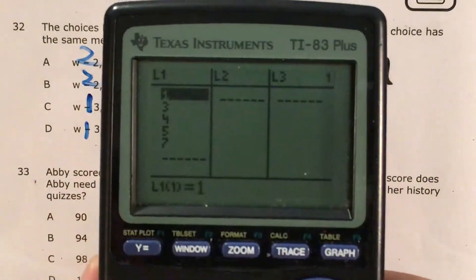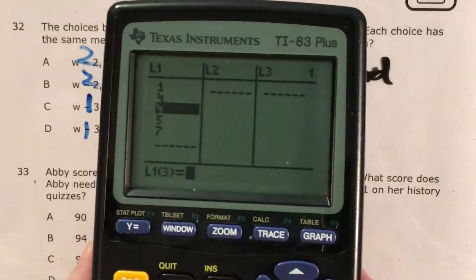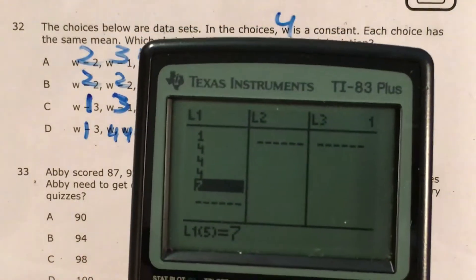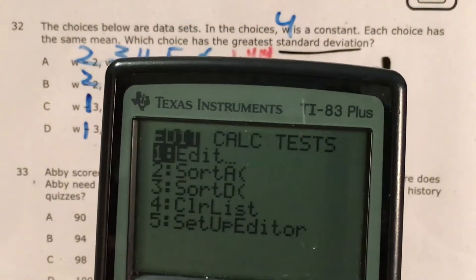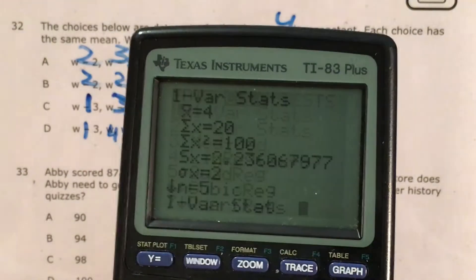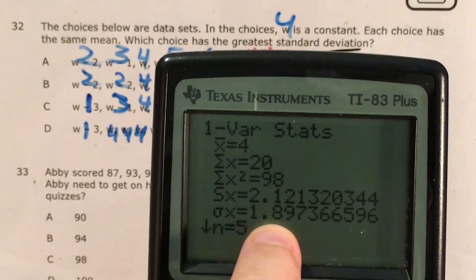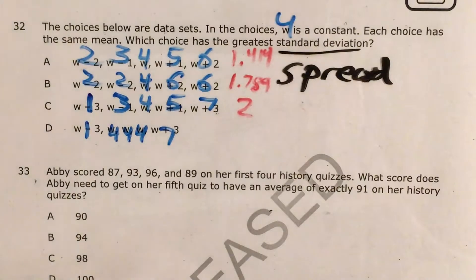Stat, edit, change all the numbers that I need to. So now I'm testing 1, 4, 4, 4, and 7. Stat, calc, one variable stats. And now my standard deviation is 1.897.